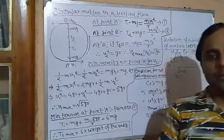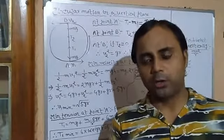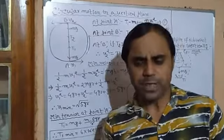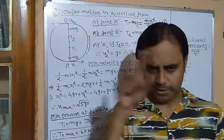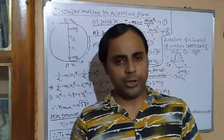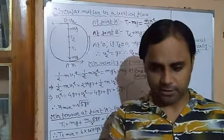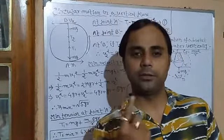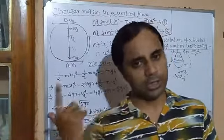We will now study circular motion or rotation of any object in a vertical plane. If we tie a stone to a string and rotate it in this vertical plane, that is called vertical plane rotation. But if we rotate it like this, it is expressed in this plane — that is called horizontal plane.